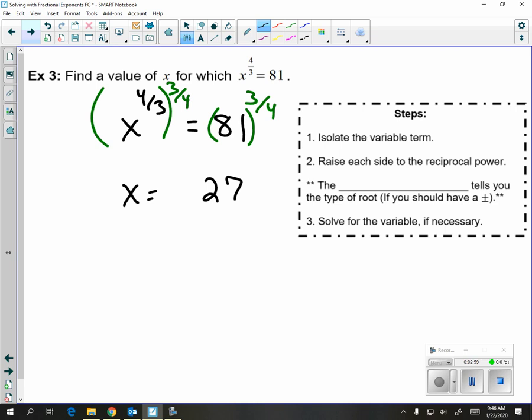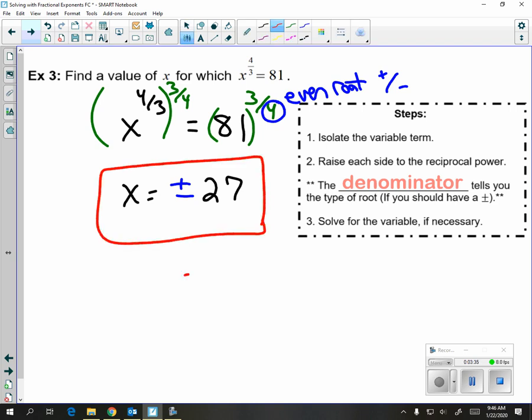But keep in mind, this 4 in the denominator, 3 is your power, 4 is your root. If you're taking an even root, you need a plus or minus in your answer. So what we're going to do is we're always going to look at the denominator. And if the denominator is even, you're taking an even root, so you need a plus or minus in your answer. If your denominator is odd, then you leave whatever sign you started with. And now we have our answer. x equals plus or minus 27.